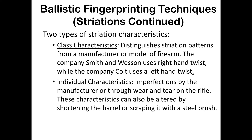There are two types of striation characteristics. Class characteristics distinguish patterns from a manufacturer or a certain model of firearm. For example, Smith & Wesson uses a right-hand twist, while the Colt Company uses a left-hand twist. So if you find a bullet with a left-hand twist, you already know it's not from a Smith & Wesson rifle. Individual characteristics have to do with that particular gun — such as wear and tear in the rifle or an old rifle that was used often.